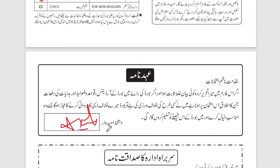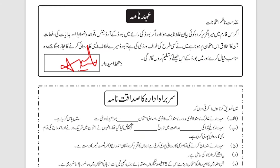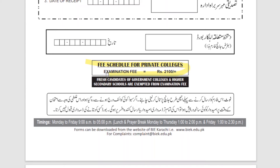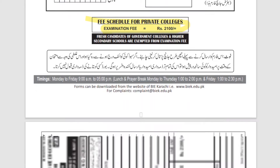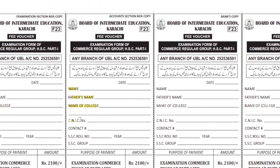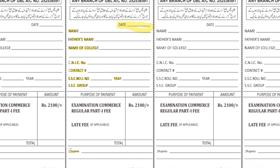You can scan your admission form and match the attendance sheet through it. If the signatures don't match, there can be a problem. On the voucher, fill in your name, father's name, college name, NIC number, contact number, metric information, metric number, and the date. Write the amount in numbers and in words — for example, 2100 should be written as 'Twenty-One Hundred' or 'Two Thousand One Hundred'.